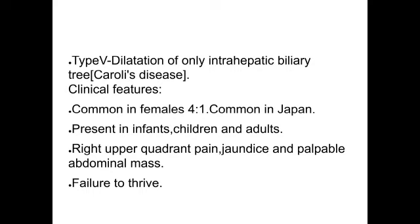Coming to clinical features: it is common in females, common in Japan, and can present in infants, children, and adults. The classic triad is right upper quadrant pain, jaundice, and palpable abdominal mass. Failure to thrive will also be present.